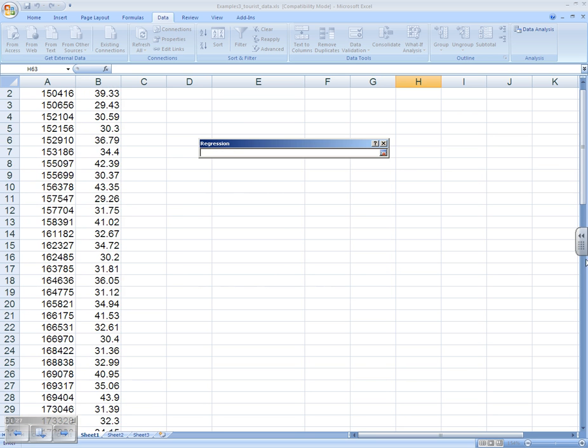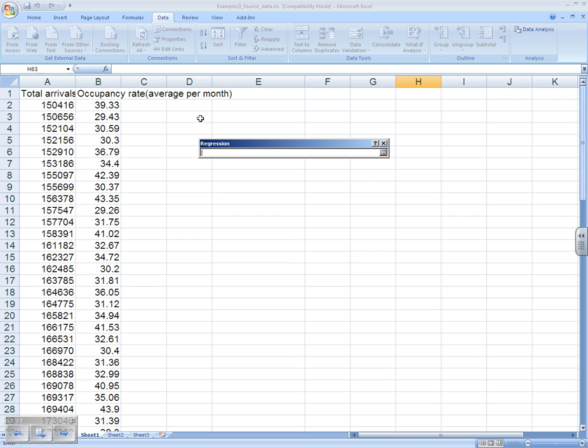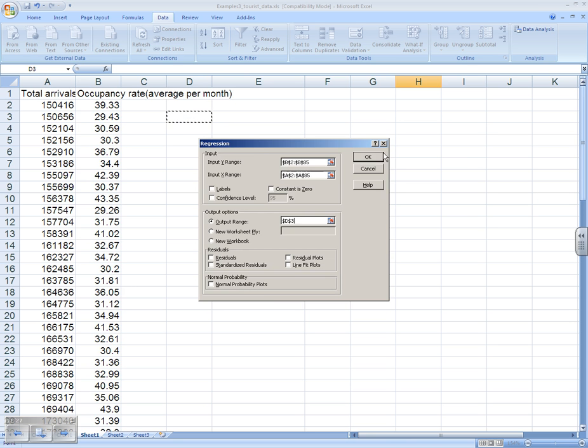Checking where to put the output. Selecting a clear cell. Excel will put the output when we click OK.